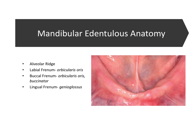So here we have the mandibular alveolar ridge. We had an upper alveolar ridge and now we have the lower, and it's typically less broad than the maxillary ridge, and that's important when we're fabricating the denture.